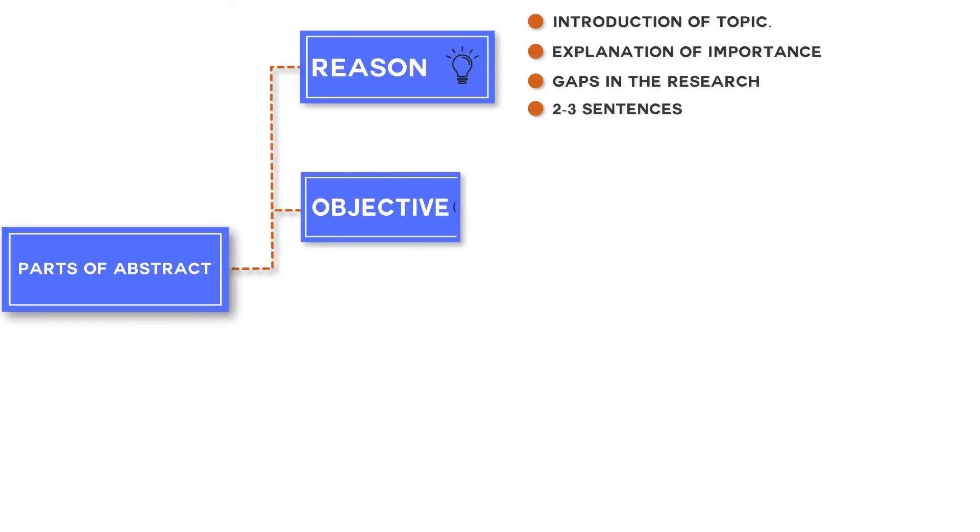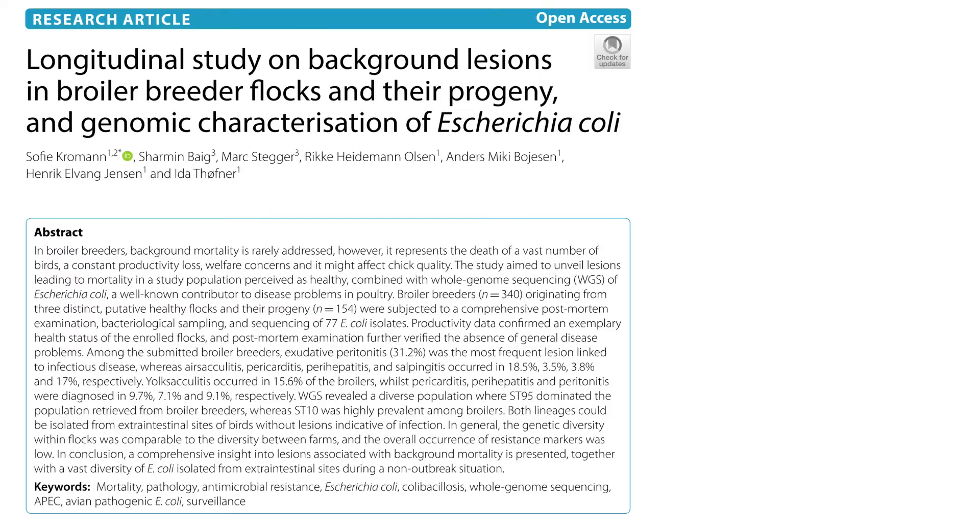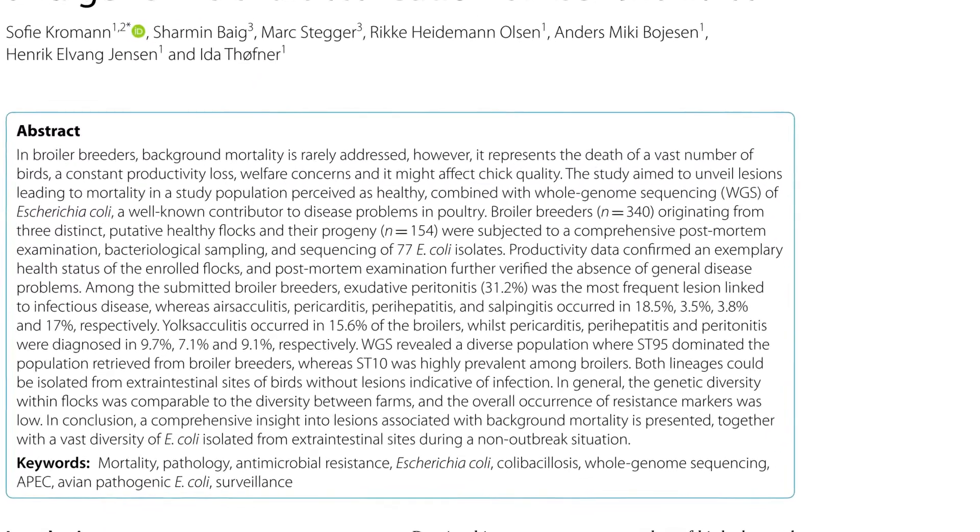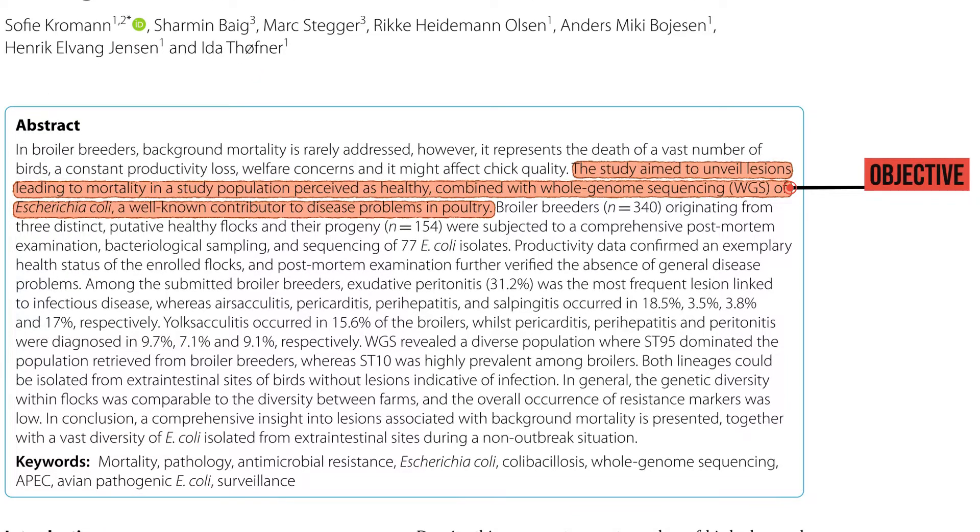Second thing you need to include is the objective or aim of your paper. This can be done in one sentence usually. Let's look at this example here. The highlighted section is the objective of the paper.